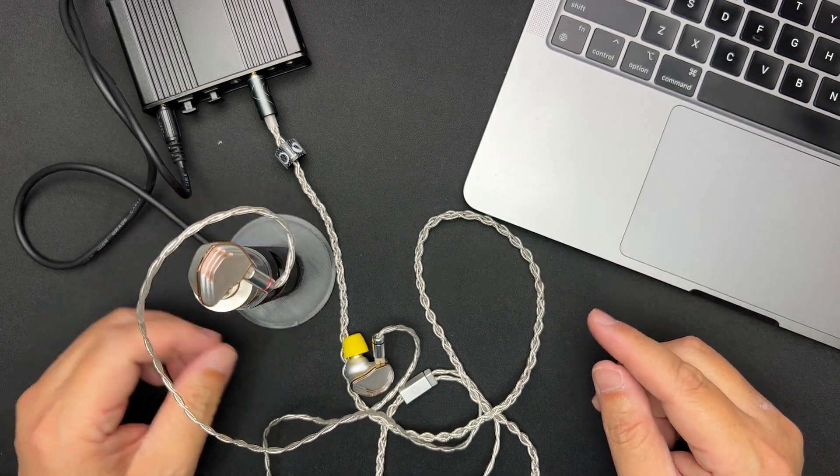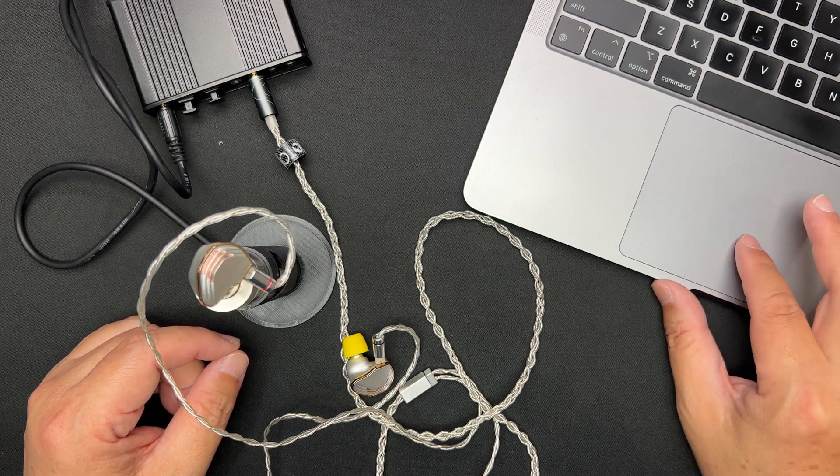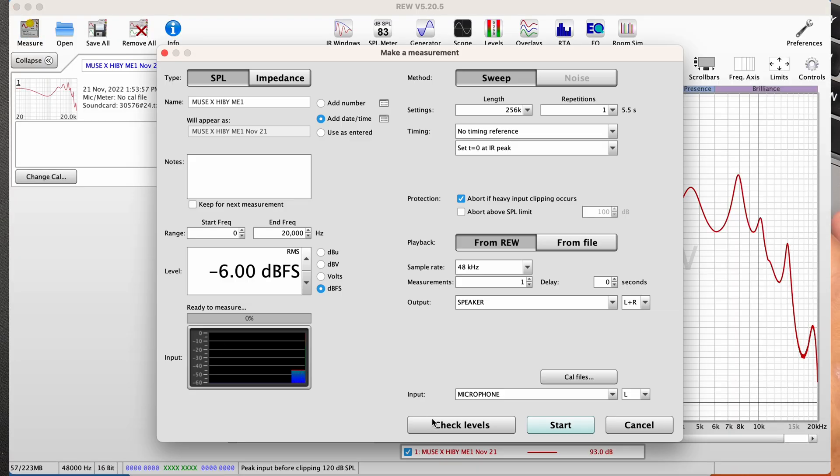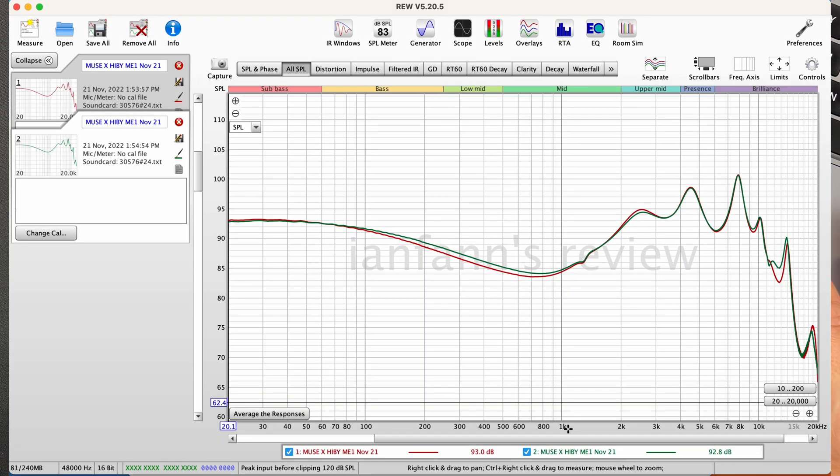Now the right side's inside. Let's go back to the computer, check the levels first - 89 dB. Let's begin. Looks like the channel matching is pretty good.